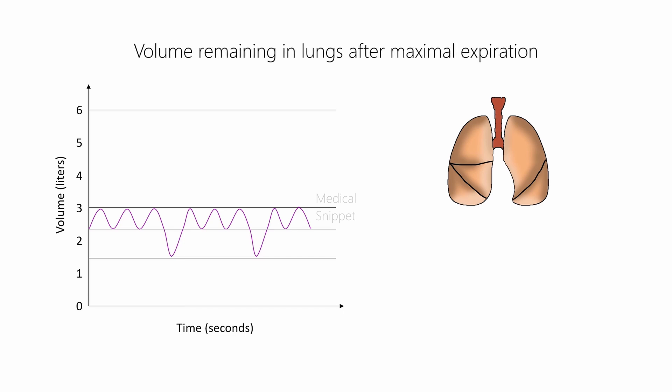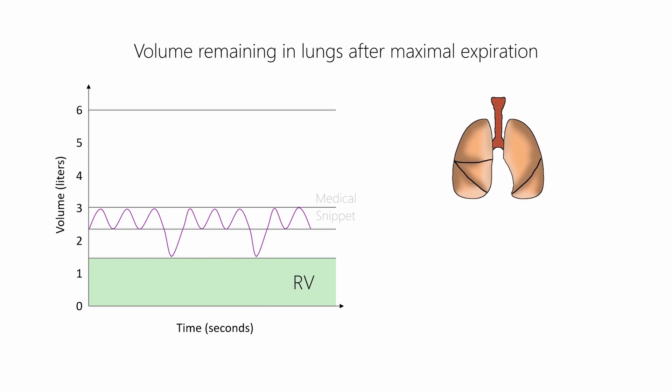The volume of air remaining in the lungs after a normal expiration is called residual volume, which is about 1 liter. This volume prevents the collapse of the alveoli.